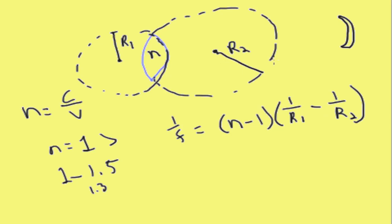And if this was the case of a concave lens, then this radius would be negative and then it would end up with a negative focal length.